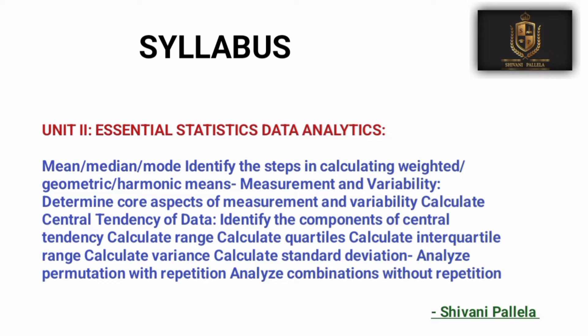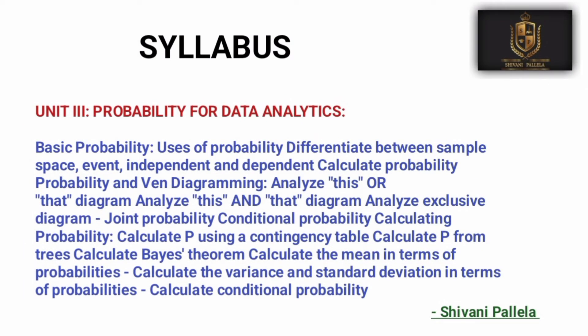Unit 2 is a lengthy chapter covering mean, median, and mode. These are the three important topics. Learn them in detail — including how to calculate interquartile range and variance. Out of these three topics you will get one question. Harmonic mean is also among the important questions.